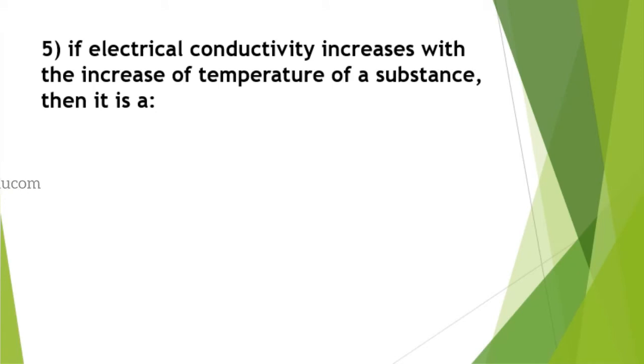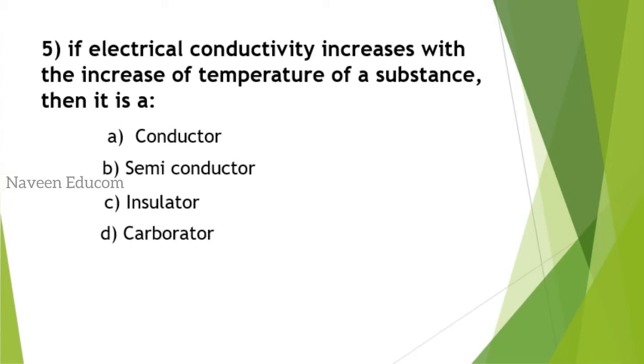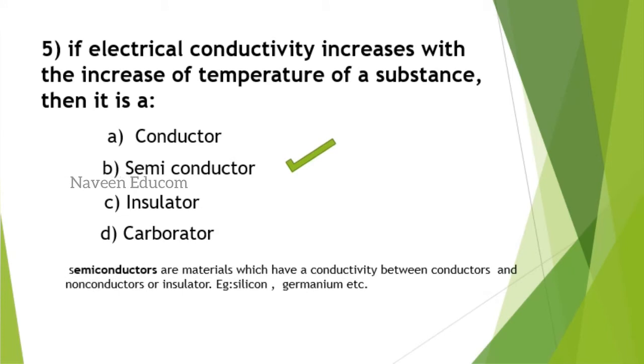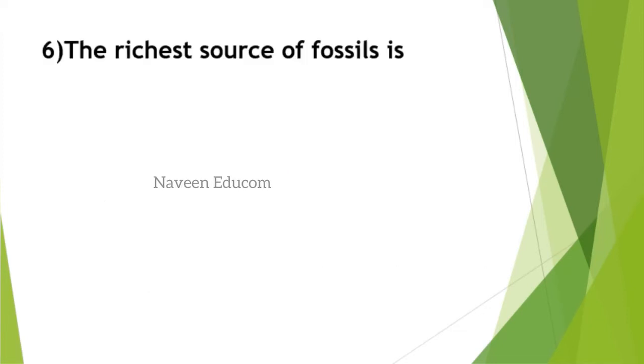If electrical conductivity increases with the increase of temperature of a substance, then it is a semiconductor. Semiconductors are materials which have conductivity between that of conductors and insulators. Examples are silicon, germanium, etc. Please note some important points regarding LEDs as well.